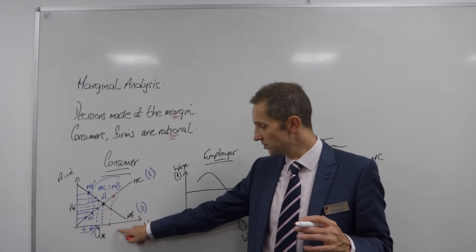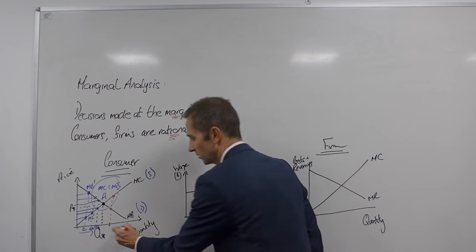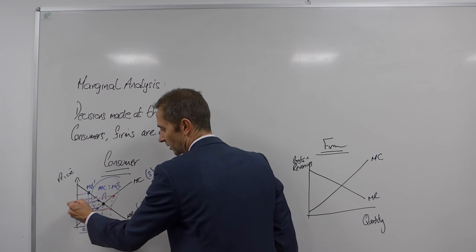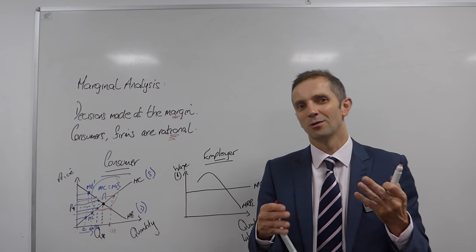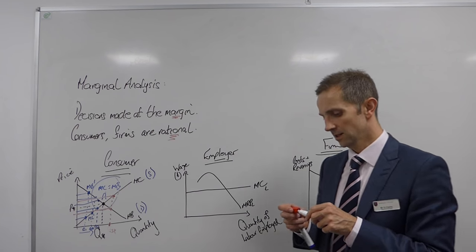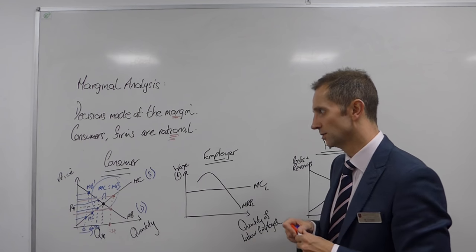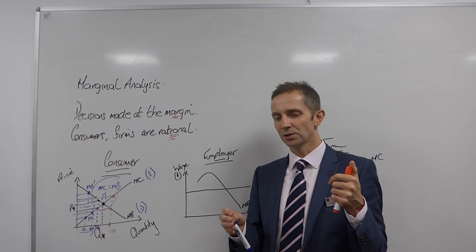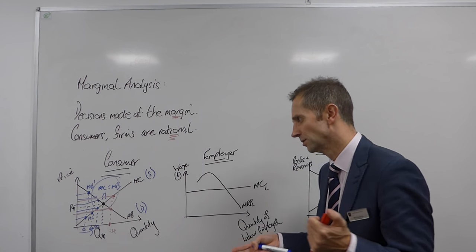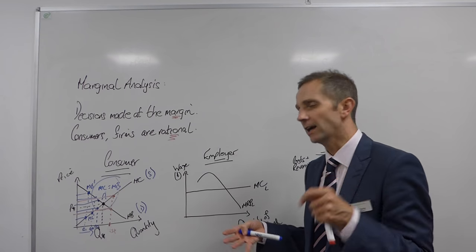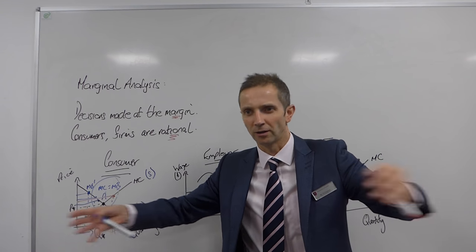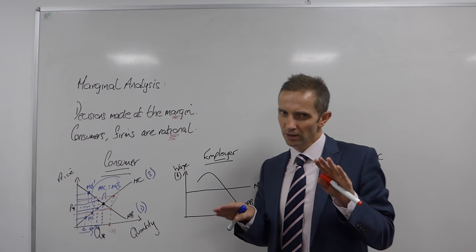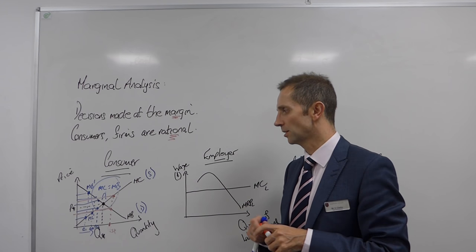The cost of consuming this additional unit, Q4, is much bigger than the benefit. Now the benefit is here and the cost is here. So it would be rational, assuming that all consumers are rational, it would be rational not to consume beyond equilibrium. Now of course, you know, I'm sure you're thinking to yourself, well, consumers aren't rational. They don't behave rationally. I consume too much sugar, too many sweets, too many cups of coffee, all this type of thing. But in the theory, we're assuming that consumers are rational.